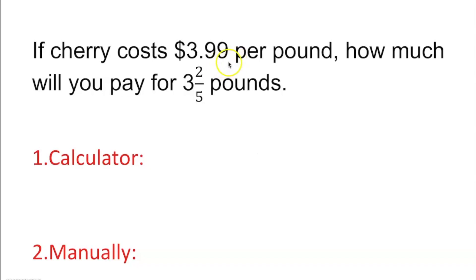First of all, you have to make a decision. Are you going to add, subtract, multiply, or divide? Let's understand what this means. $3.99 per pound means 1 pound equals $3.99. If 1 pound is approximately $4, we are buying actually more than 3 pounds.